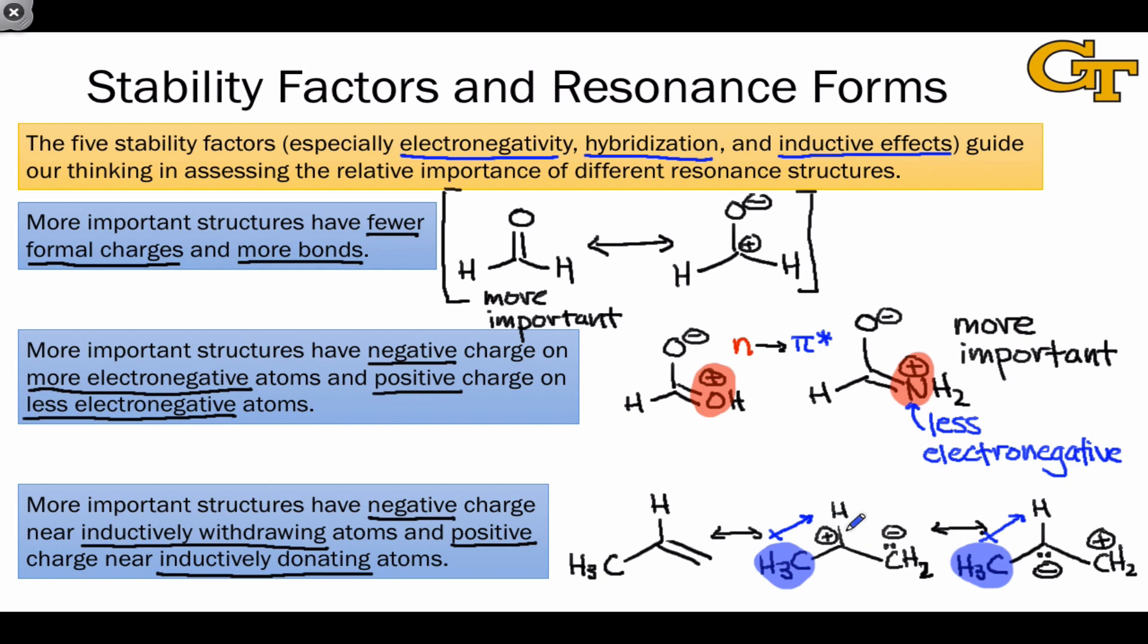Notice in the middle structure here that this donation will tend to stabilize the positive charge on the central carbon atom. However, in the molecule on the right, this donation seems to clash with the negatively charged lone pair found at that central carbon. The structure that fits the rule, as we've stated it here, is the central resonance form, which contains positive charge adjacent to an inductively donating atom. As a consequence, it's the more important of the two resonance structures shown on the right, with the neutral structure, of course, being most important of all.